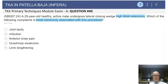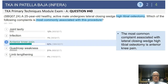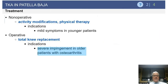A 25-year-old healthy active male undergoes a lateral closing wedge high tibial osteotomy. Which of the following complaints are most commonly associated with this procedure — joint laxity, infection, anterior knee pain, quad weakness, or contralateral limb lengthening? The most common complication after a high tibial osteotomy, particularly a lateral closing wedge, is Baja with subsequent anterior knee pain.